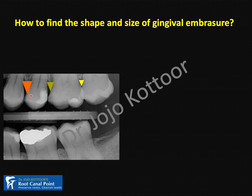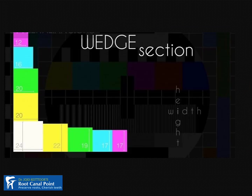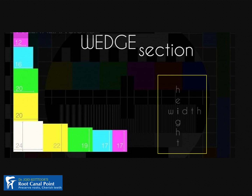Or probably you need to place a wedge over the first wedge. If you are not able to take a bitewing, an IOPA taken on a paralleling technique will also serve the purpose — we need a small wedge here, a medium wedge here, and obviously a large wedge here. Hence, the wedge we select for a particular class 2 restoration should mimic the width and height of the embrasures.